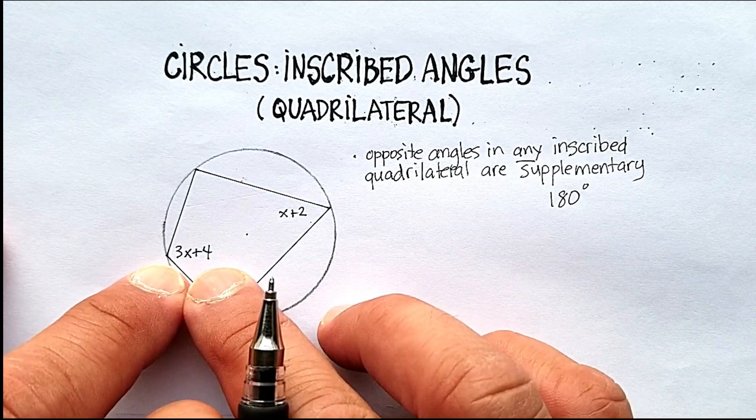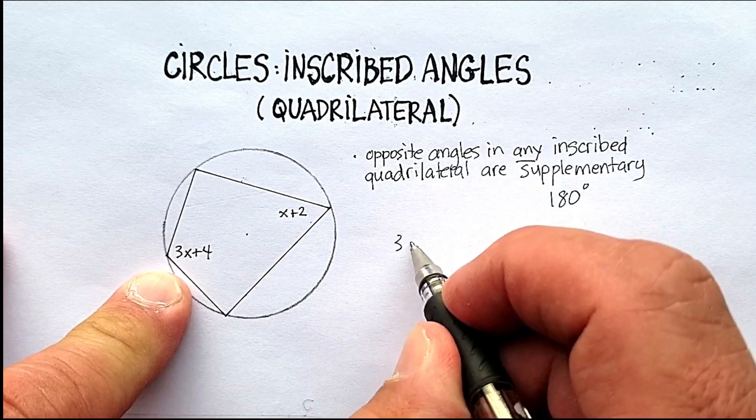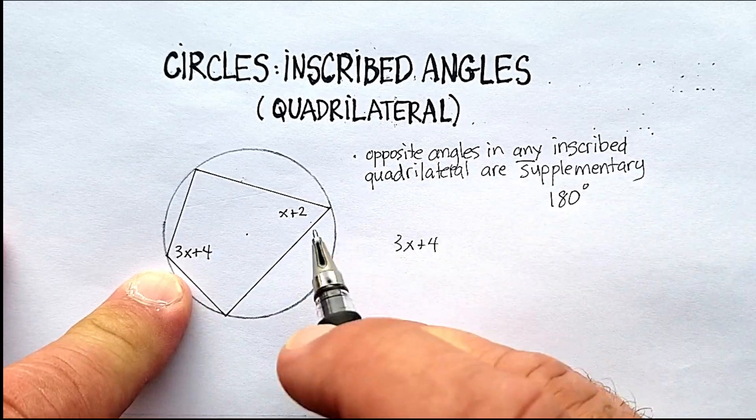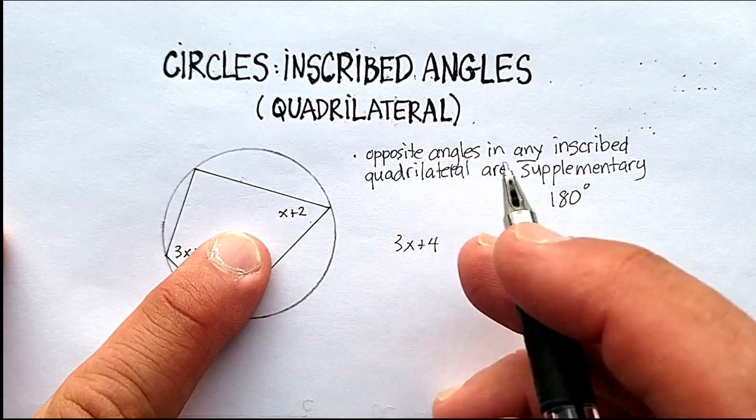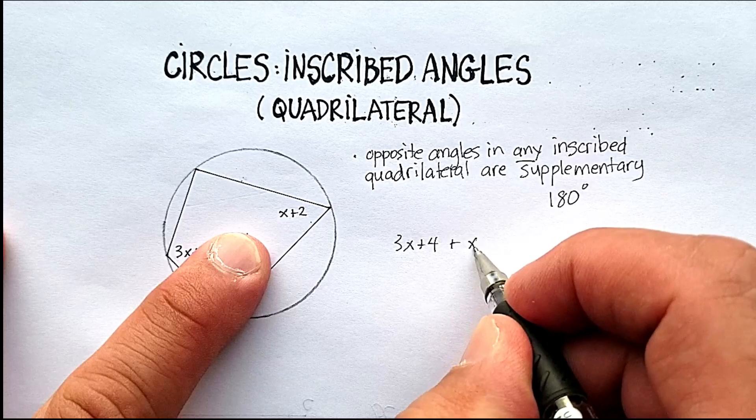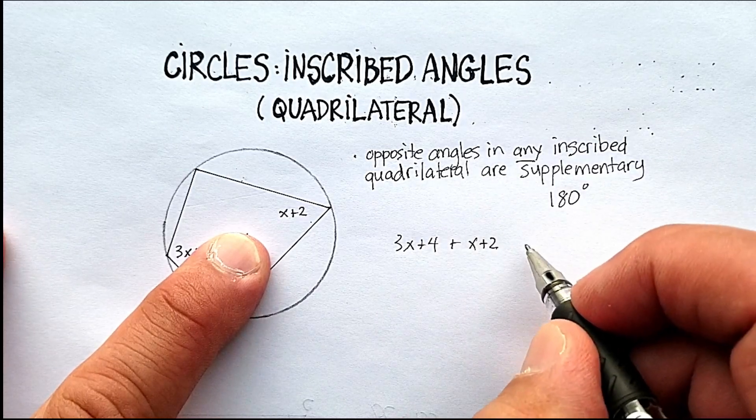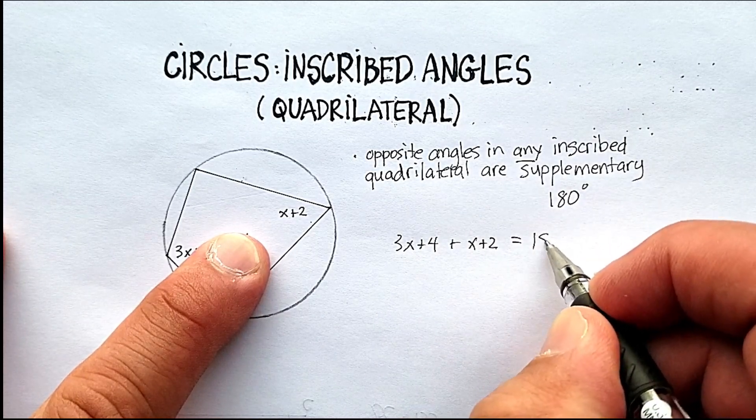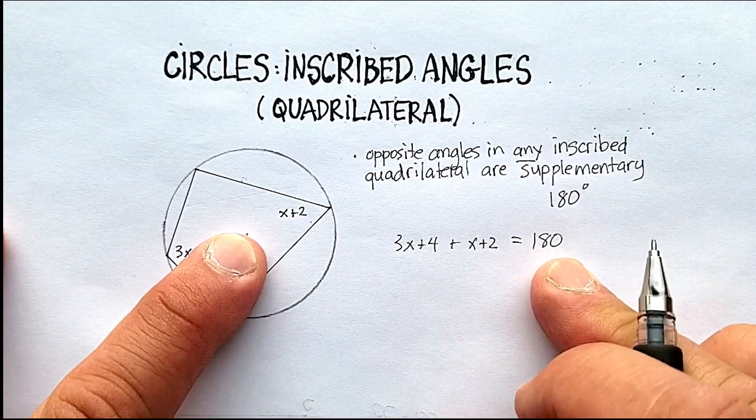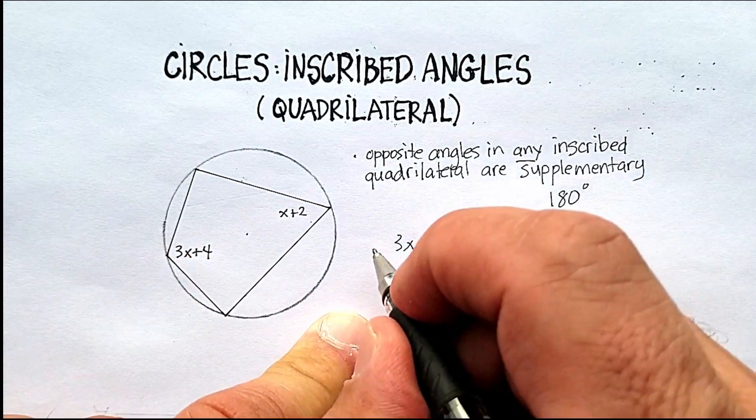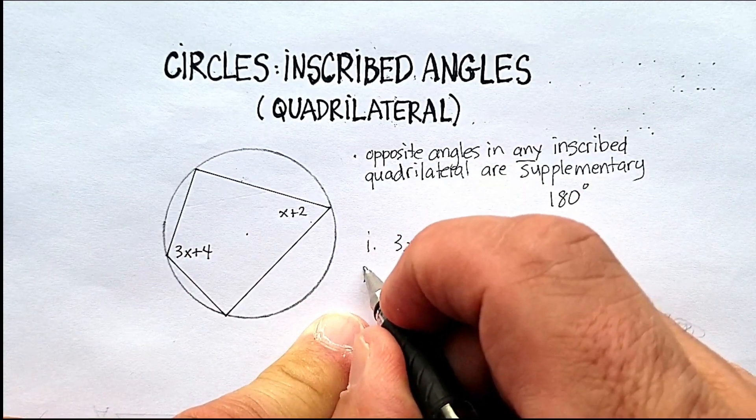Well, I know that this angle, 3x plus 4, plus this angle, x plus 2, are supplementary, which means add up to 180 degrees. So basically what I've done is I've created myself an algebra equation. Let's just go ahead and quickly solve this.